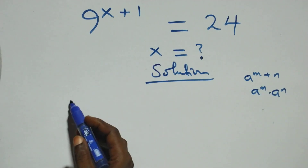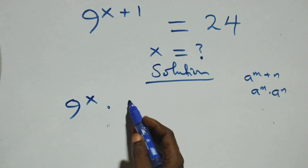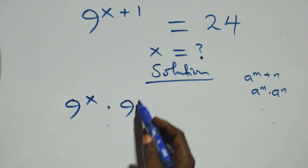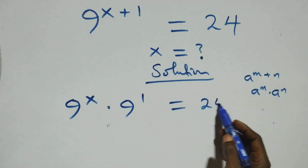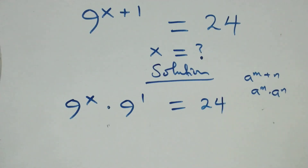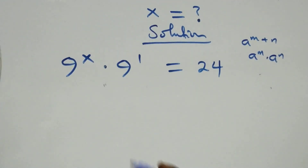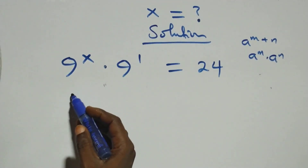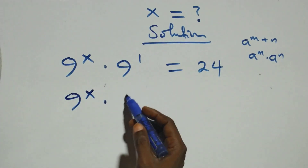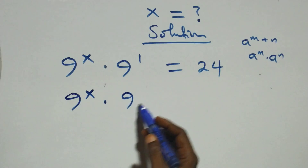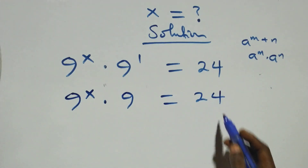Here we have nine raised to the power x times nine raised to the power one equals twenty-four on this side. The next step: this is the same thing as nine raised to the power x times nine — that's nine — equals twenty-four on this side.